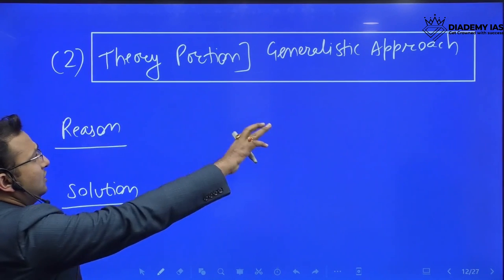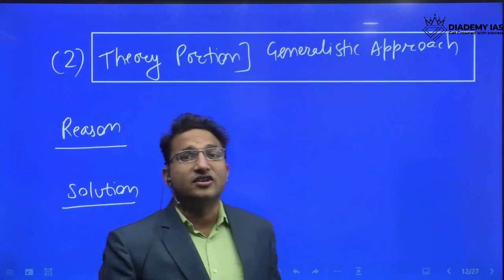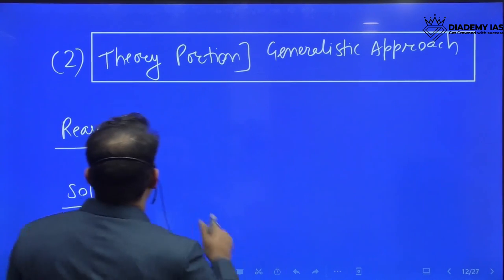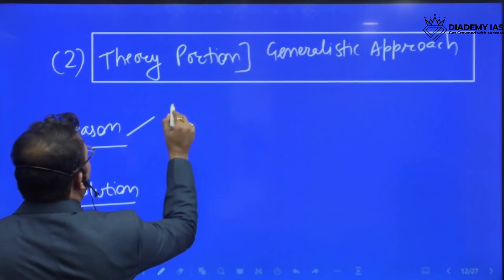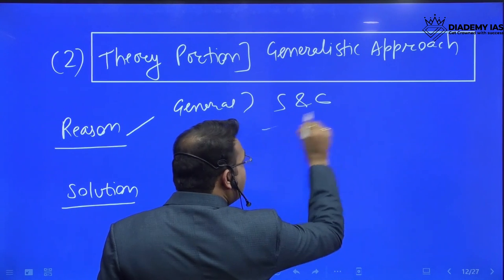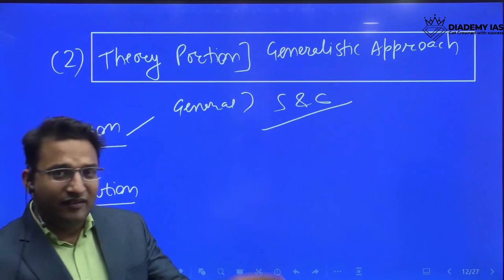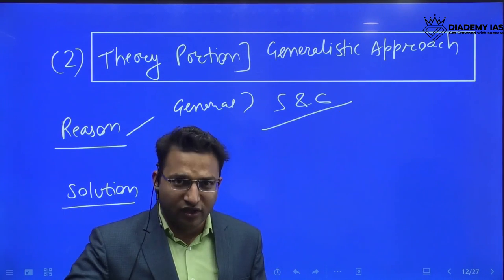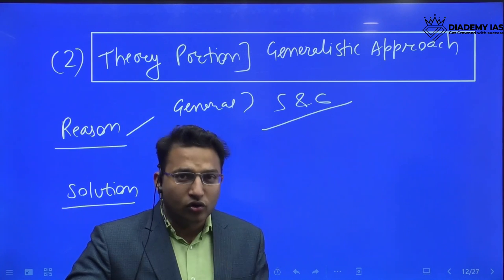Next, theory portion: people are still following a generalist approach. What is the reason for that? Because they are following only very general books like Singh and Chhabra. This is a very outdated book. I respect this book, very good book for concept clearing. There are good concepts.